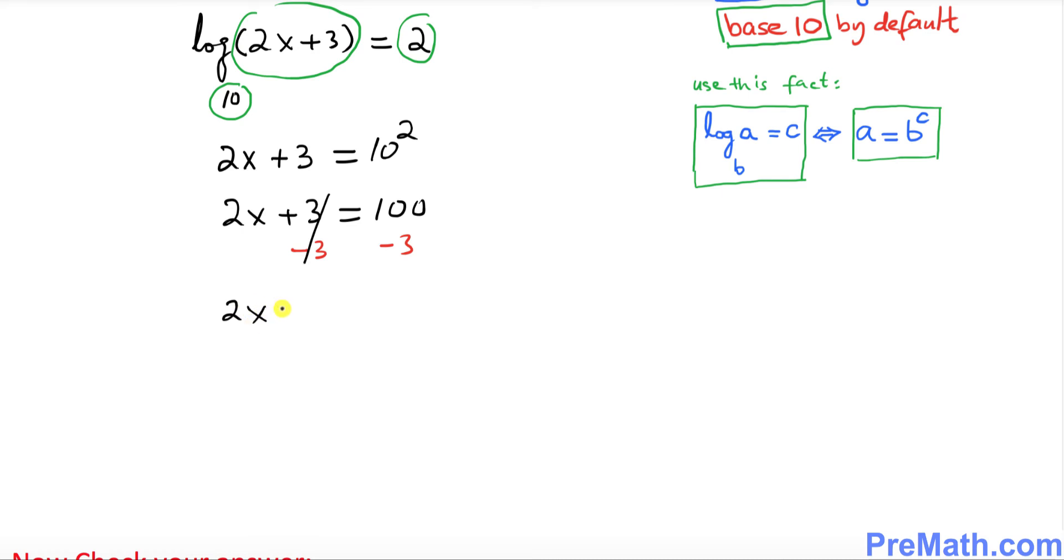So 2x equals 97. I want you to divide it by 2, so x turns out to be 97 over 2 as our solution.